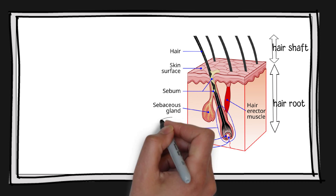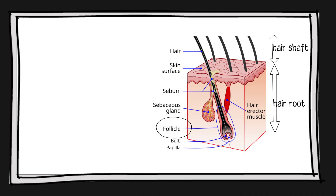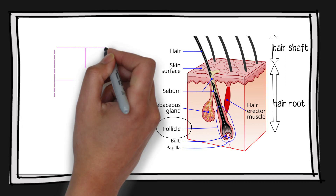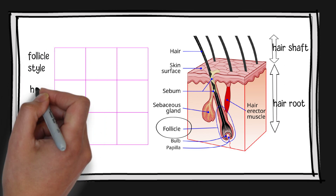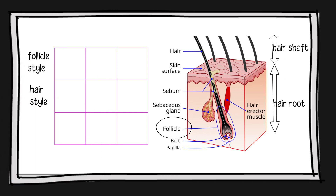The hair root is enclosed by the hair follicle, a protective covering composed of skin and connective tissue, and this follicle is also associated with a sebaceous gland. The shape of your hair follicles plays a significant role in determining the curl pattern of your hair.